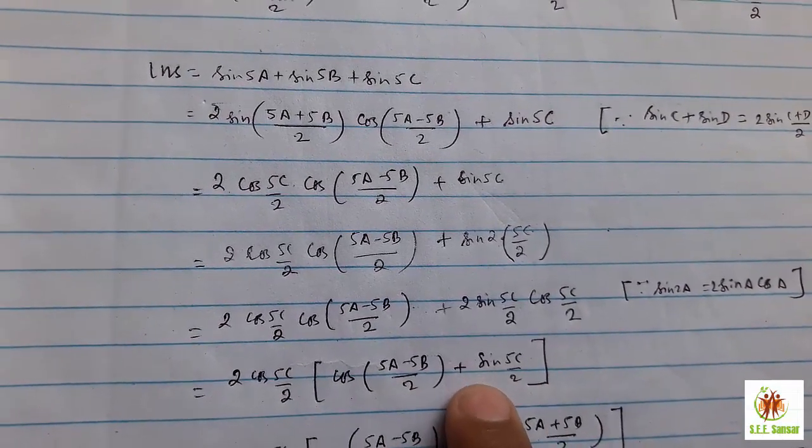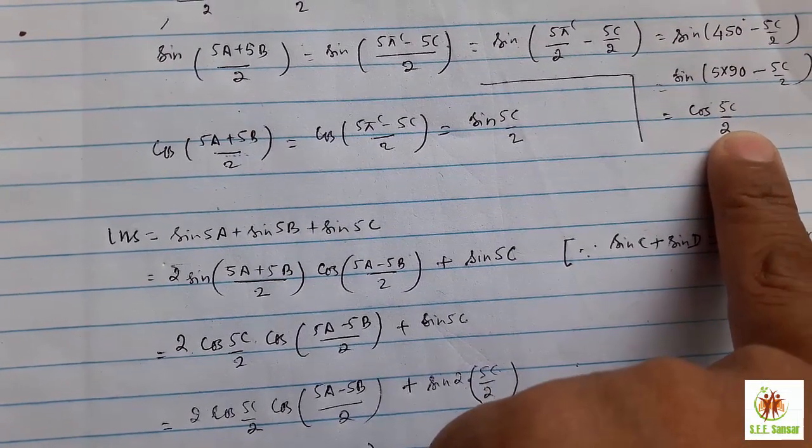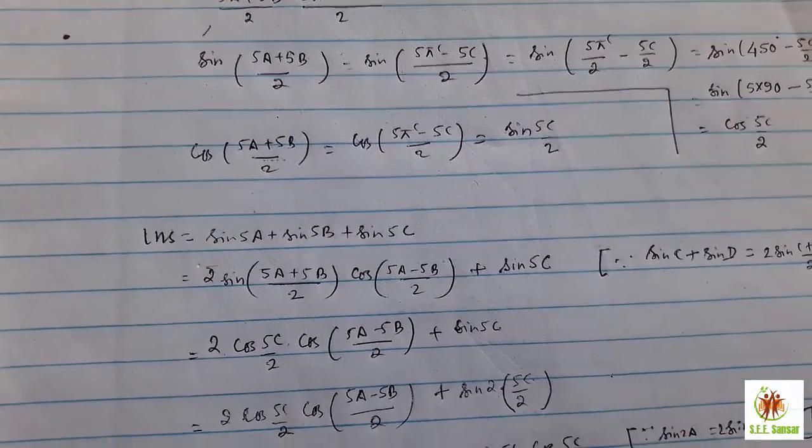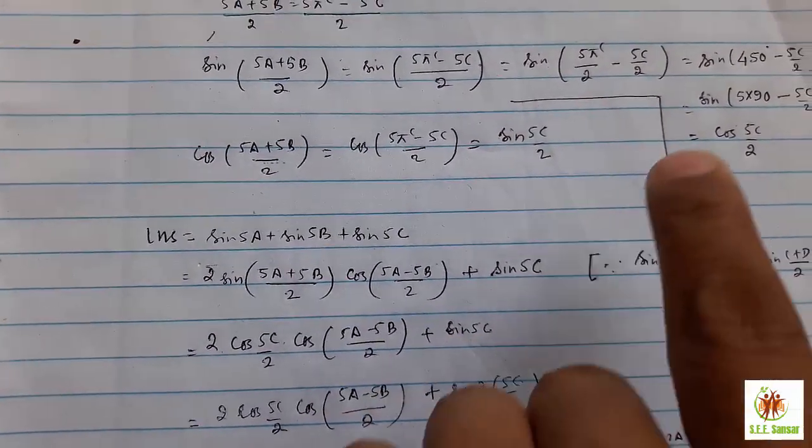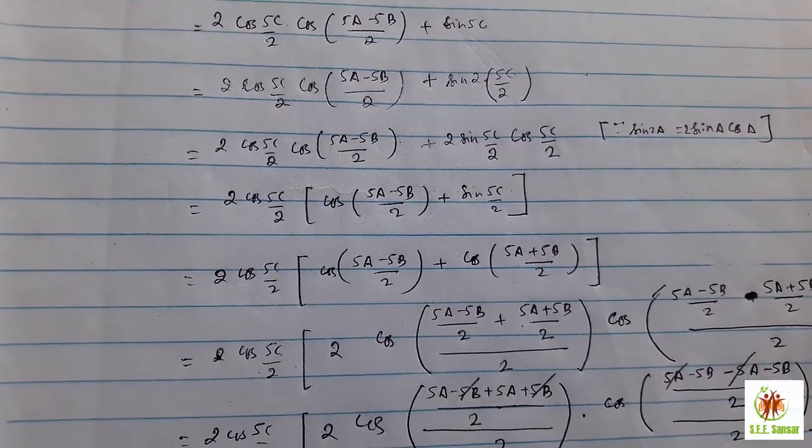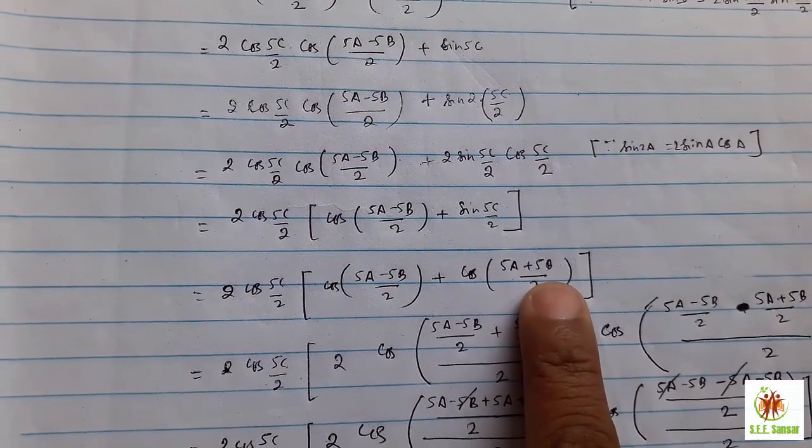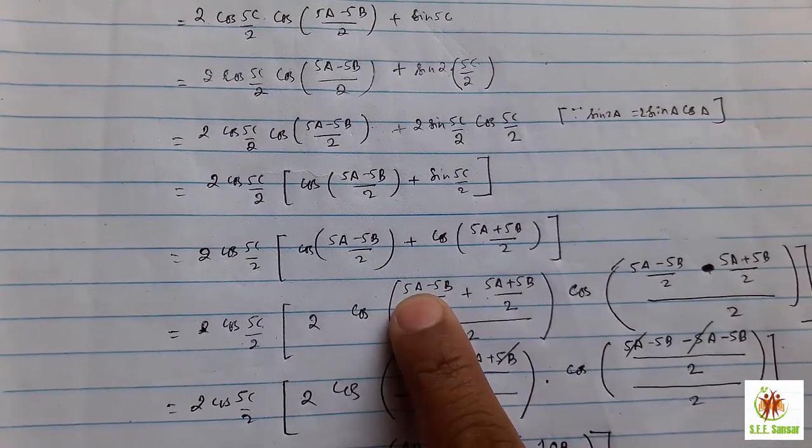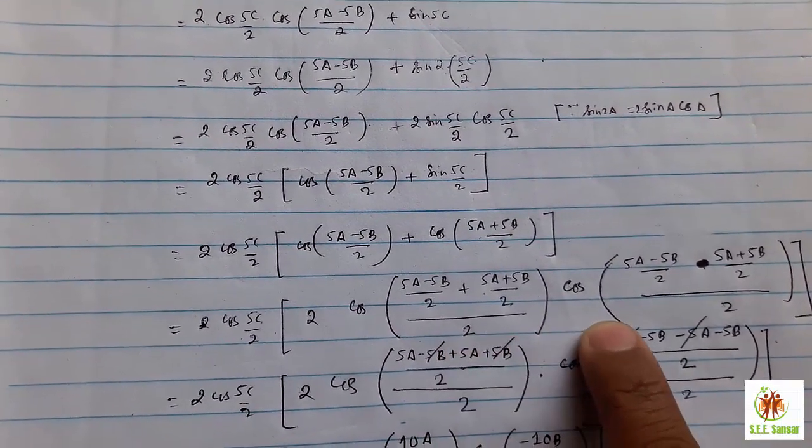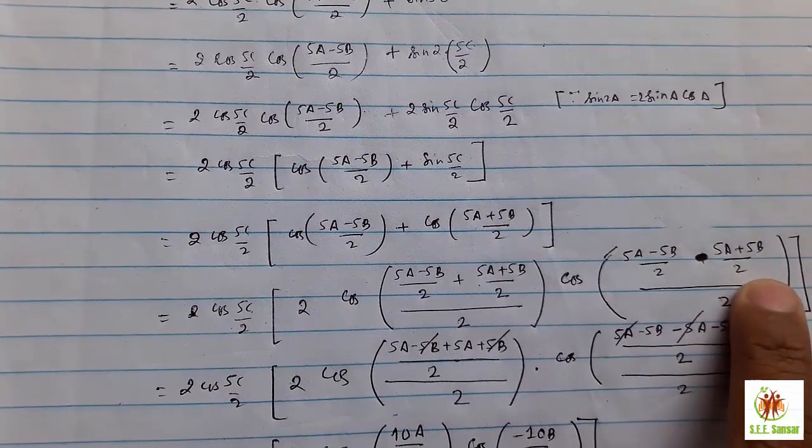Here also we can see there are not like terms. Look at here, there is sin 5c by 2. The value of cos 5c by 2 is sin 5a plus 5b by 2. Similarly, the value of sin 5c by 2 is also cos 5a plus 5b by 2. Put that value here. We have cos c plus cos d. Again we use the formula of 2 cos c plus d divided by 2. Remember, sometimes we forgot this one, and because of that the whole solution becomes mistake, wrong.